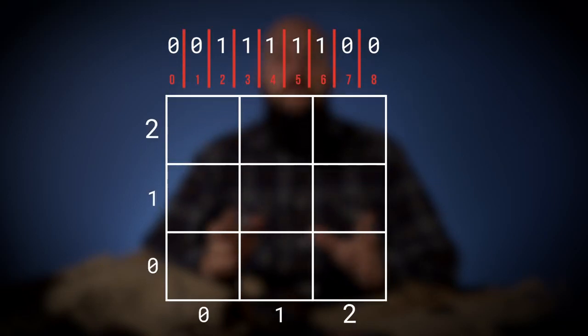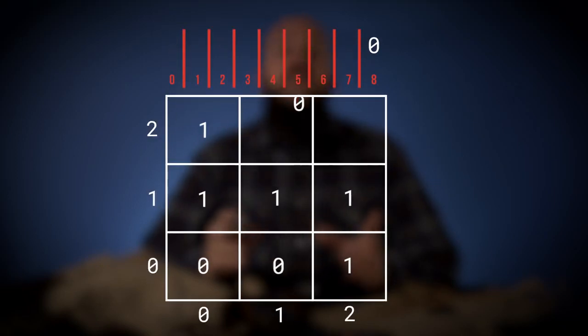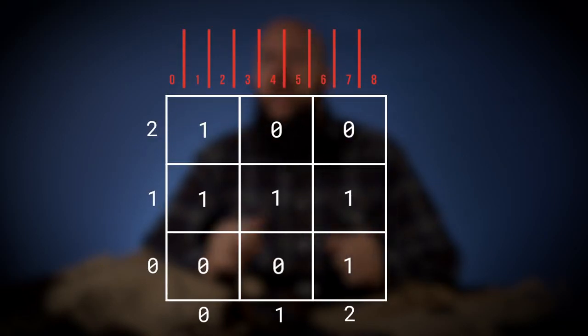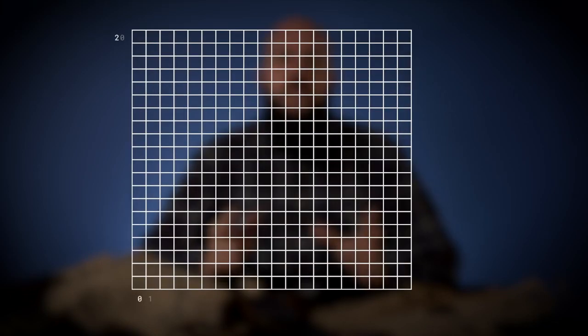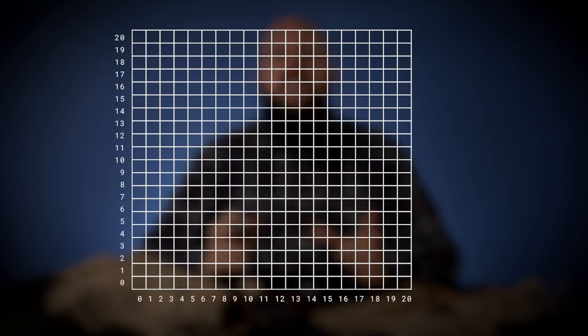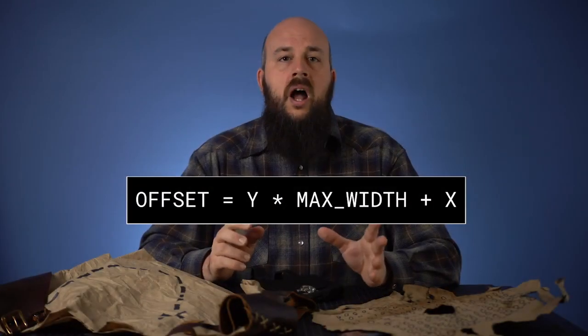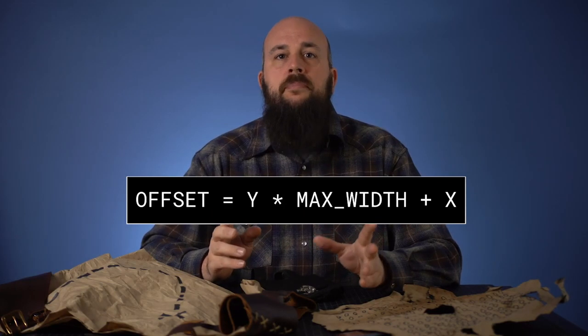Think of a Redis bitmap as an array of bits stored in a string. We'll associate each game map tile on its XY coordinate plane with an offset in the bitmap. A one bit at an offset indicates that a player has visited the corresponding tile. All other bits will default to zero, meaning unvisited. Our first map will be a 20 by 20 coordinate plane with the origin at 0, 0 in the bottom left. We'll need a formula to compute the offset based on the desired XY coordinate. Let's use this formula: Y multiplied by the width of the map plus X.